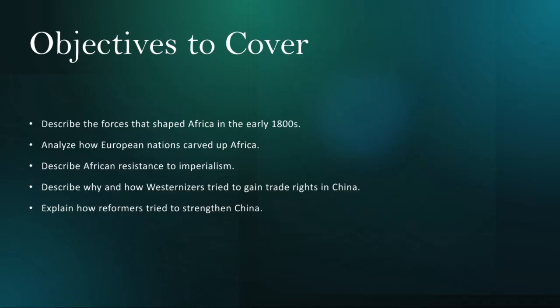As European powers sought to expand their empires and access Africa's abundant resources, they engaged in a process known as the Scramble for Africa. Through diplomatic negotiations, military conquests, and treaties, European nations carved up Africa into colonies and spheres of influence. The Berlin Conference of 1884 formalized this partition, disregarding African sovereignty — the right to self-rule — and leading to lasting geopolitical consequences.